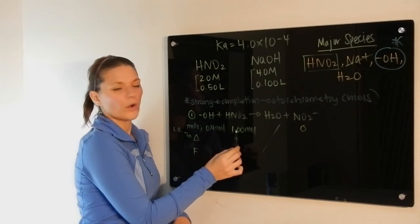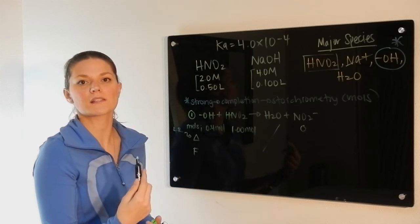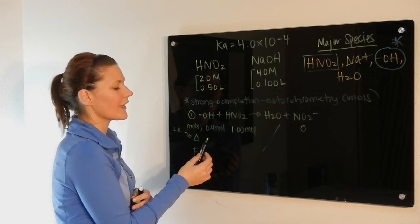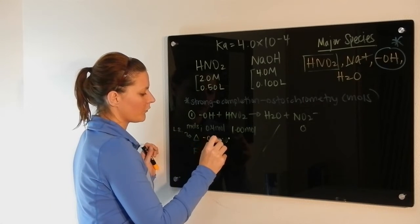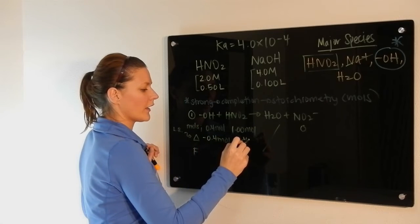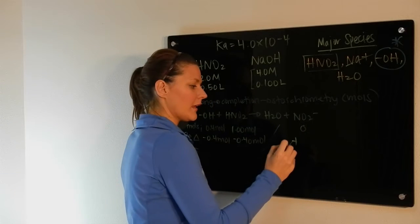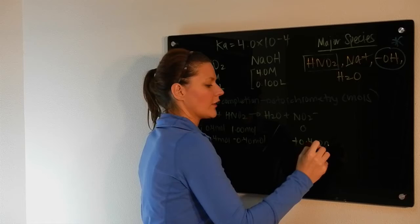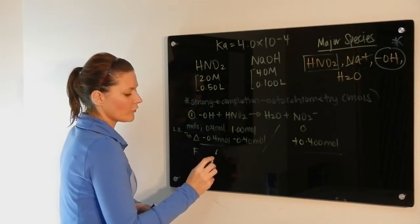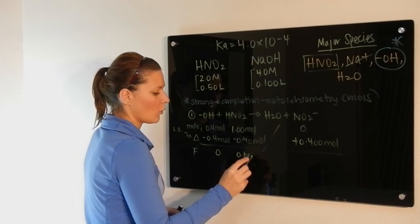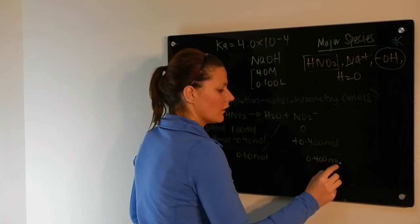So because there's a 1 to 1 mole ratio, you can directly compare the number of moles and determine which one is limiting. Because there are fewer moles of hydroxide, it is the limiting reactant. So we're going to subtract 0.4 moles. Once again, 1 to 1 mole ratio, so we also get rid of 0.4 moles there. And now we have to keep in mind we're going to be forming, hence the positive, 0.4 moles of nitrite. We add that row up. We have no more hydroxide. We have 0.6 moles of nitrous acid, and we have 0.4 moles of nitrite.